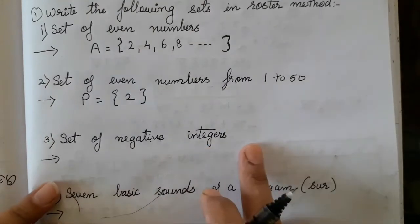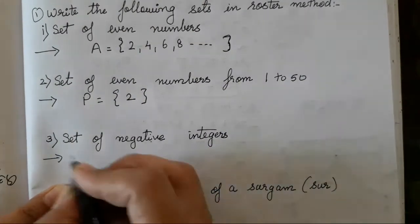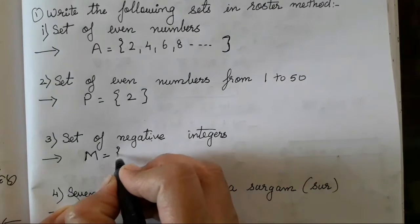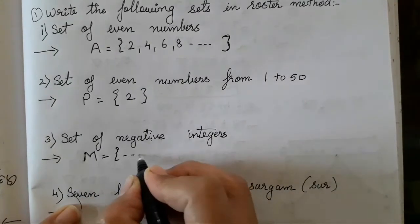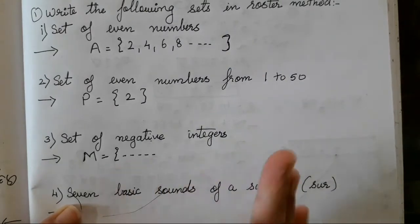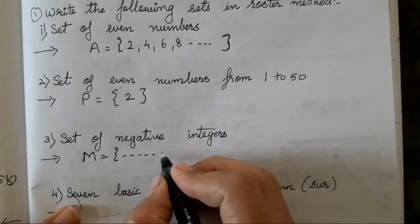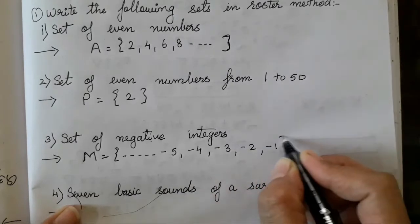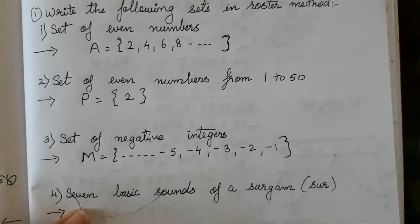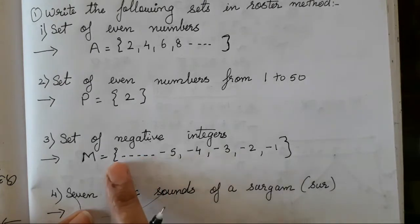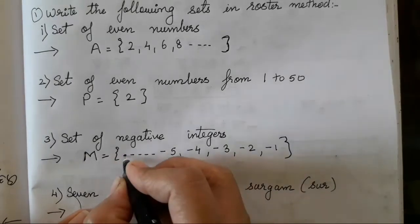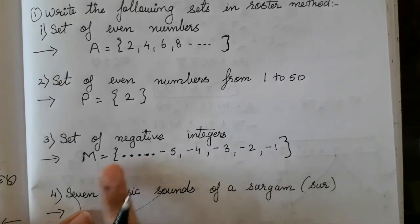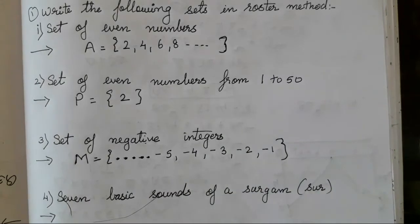Now set of negative integers. Negative integers you all have to mark. So I will take it as M. Any alphabet you all can take. M such that negative integers. So if you will see number line, number line starts from the left hand side. So I will take here minus 5, minus 4, minus 3, minus 2, minus 1. Why I have put infinite dot over here? We are showing that still few numbers can be added. Minus 6, minus 7, minus 8, minus 9 and it keeps on increasing. So it's infinite.